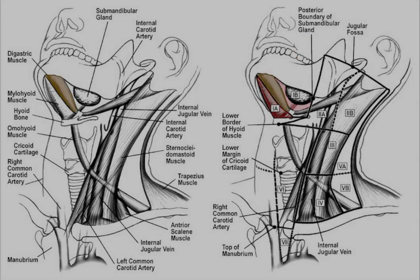Level 1 is separated from level 2 by the posterior border of the submandibular gland. Level 2 itself is separated into the more anteriorly located level 2a and level 2b, and those two are separated by the posterior border of the internal jugular vein.